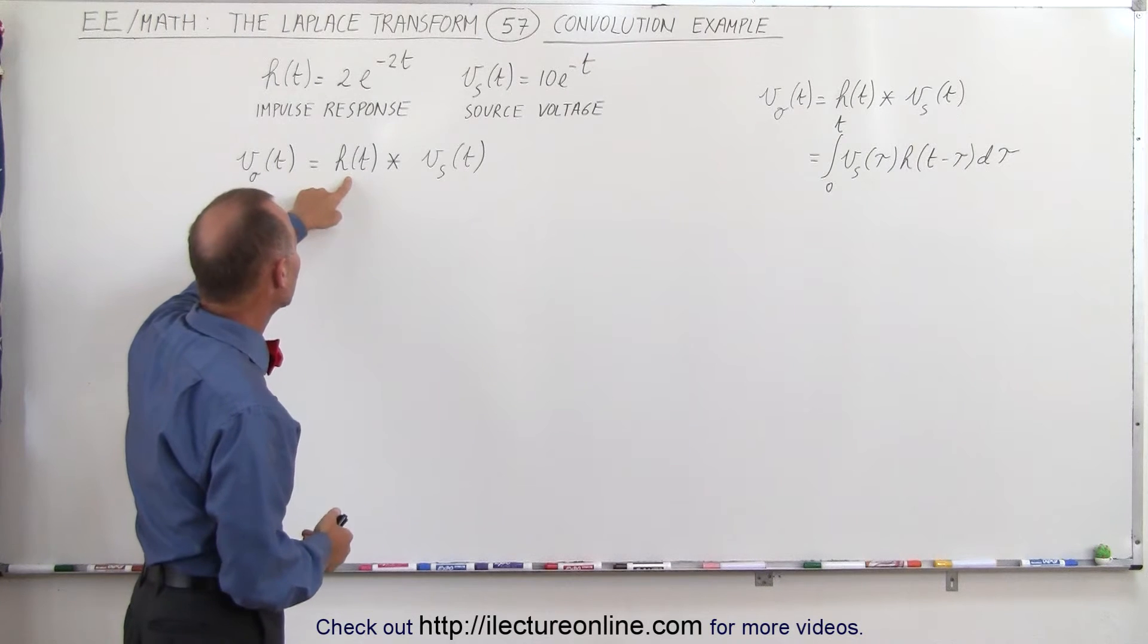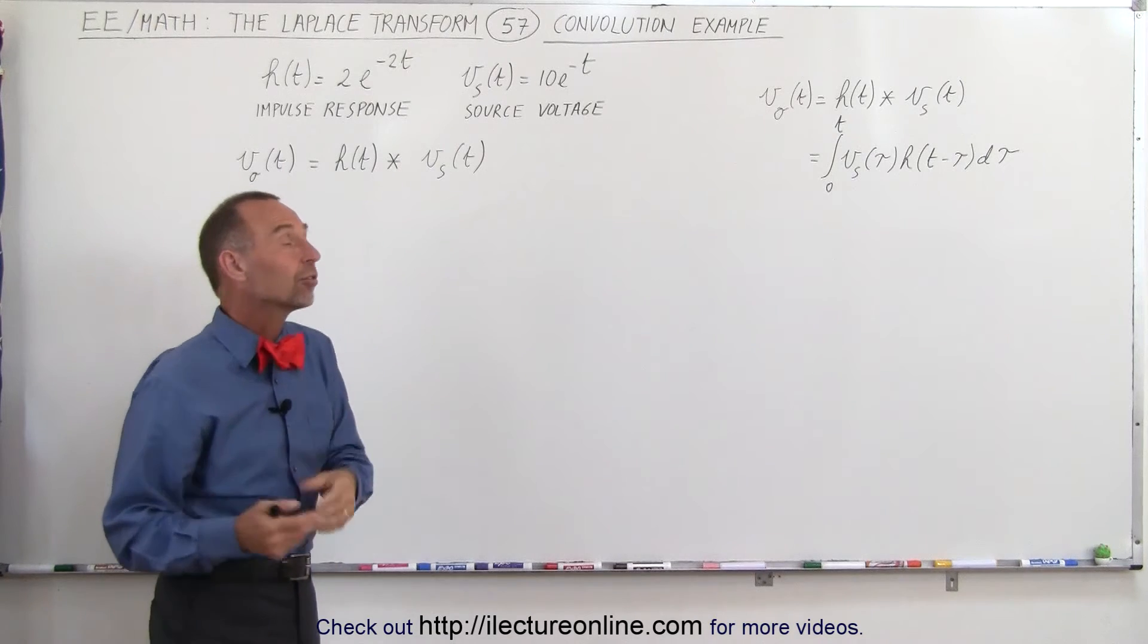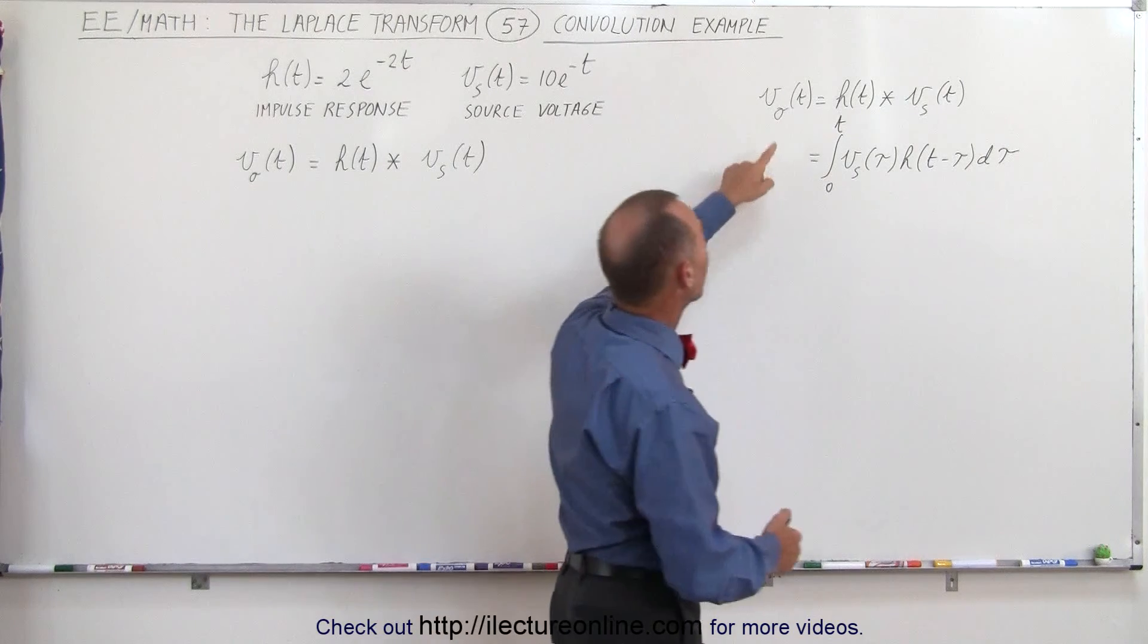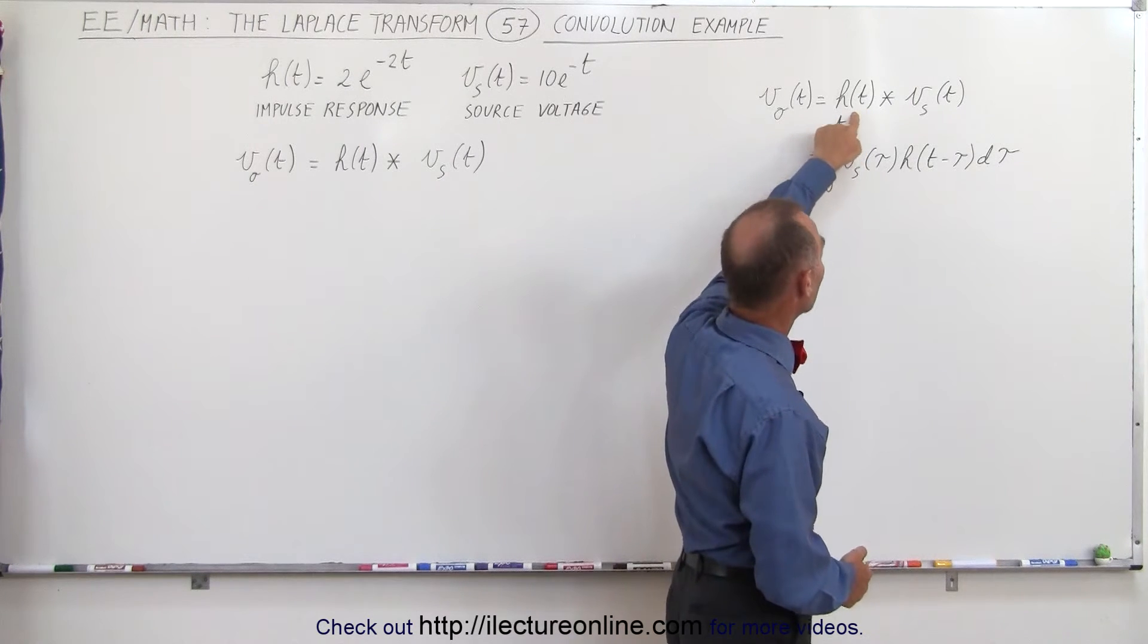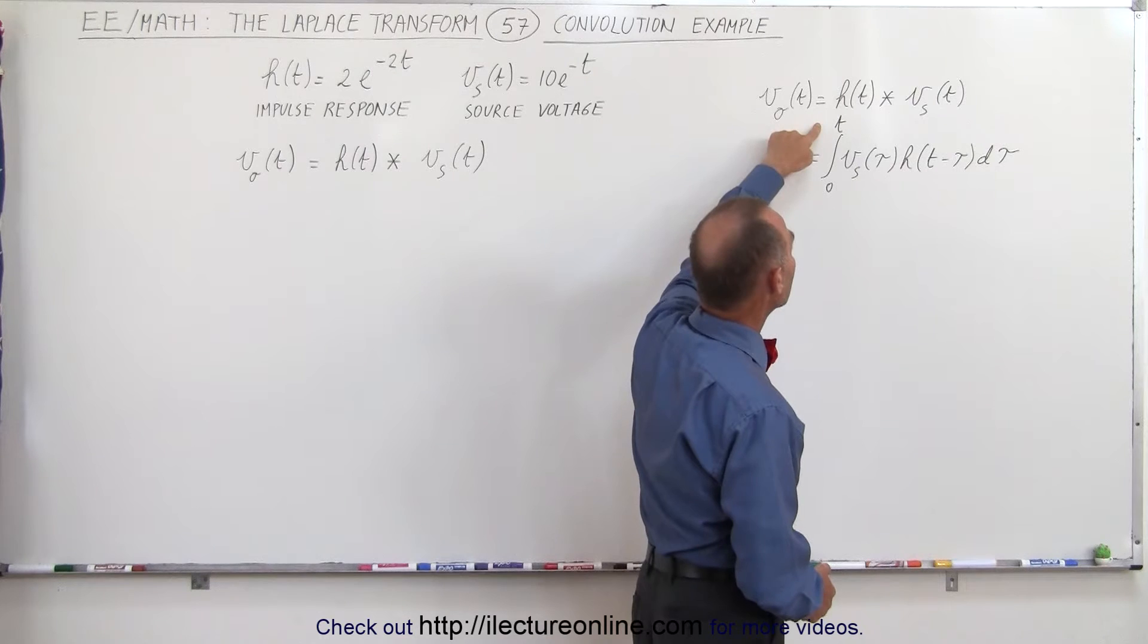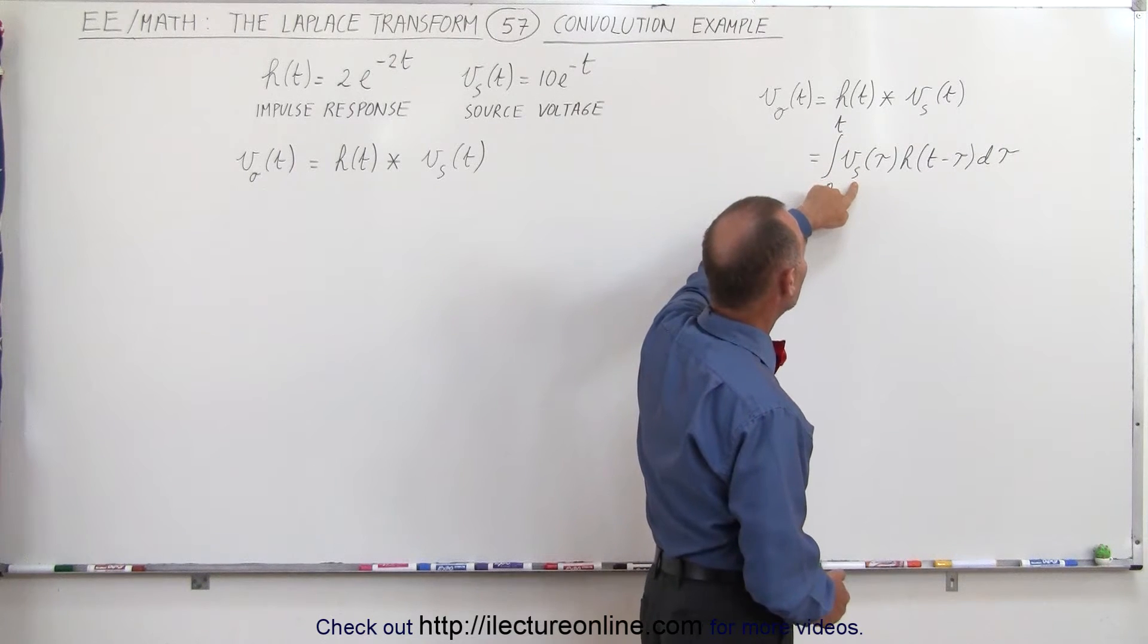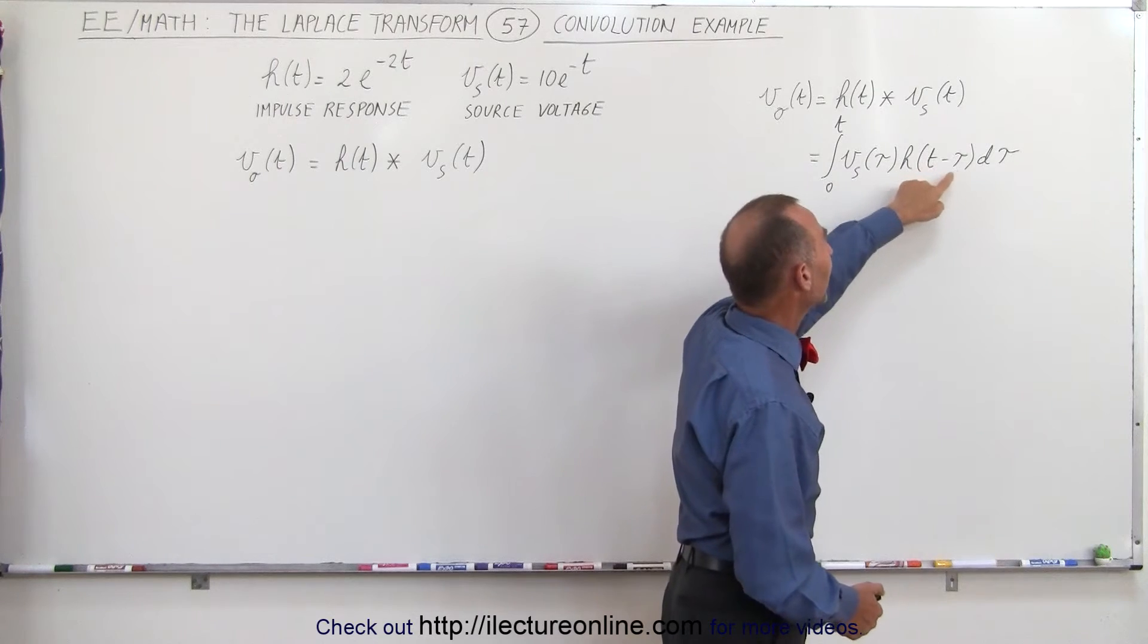And we know it's the convolution of the impulse response and the source voltage. To remind ourselves of the general equation of the convolution: since the output voltage is equal to the convolution of the impulse response and the source voltage, it's equal to the integral from 0 to t of the source voltage in the dummy variable tau times h of t minus tau d tau.